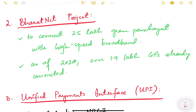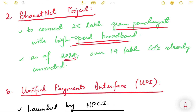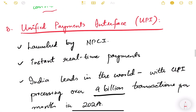The BharatNet Project aims to connect 2.5 lakh gram panchayats across the country with high-speed broadband. As of 2024, over 1.9 lakh gram panchayats are already connected out of 2.5 lakh. This is a matter of great pride as high-speed internet has reached even the remotest gram panchayats.